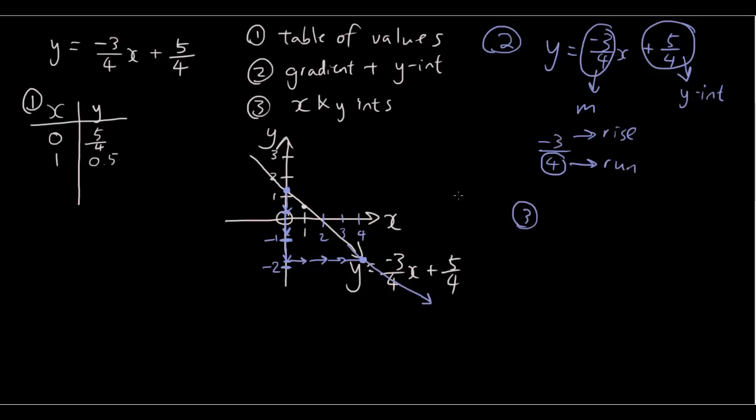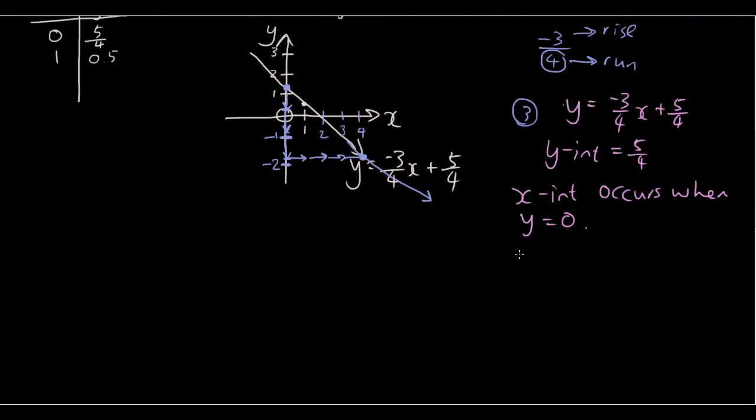So using the second method, we have drawn the same line. Now let's try the third method using the x and the y intercepts. Now we have the equation y equals negative 3 over 4x plus 5 over 4. We know that the y intercept is 5 over 4. Now the x intercept occurs when y is equal to 0. So if we set y equal to 0 in our equation, 0 equals negative 3 over 4x plus 5 over 4, and then we rearrange the equation.